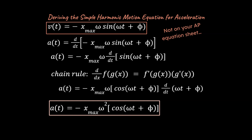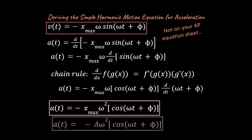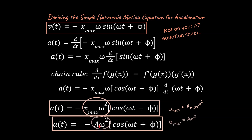Taking that omega out in front, we end up with negative x-max times omega squared times cosine(ωt) — that's our acceleration versus time equation. Using A for amplitude, the maximum acceleration would be x-max times omega squared, or amplitude times omega squared. That gives you the maximum and minimum acceleration values.